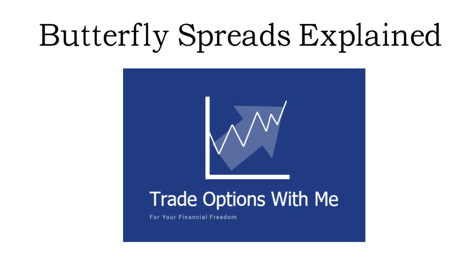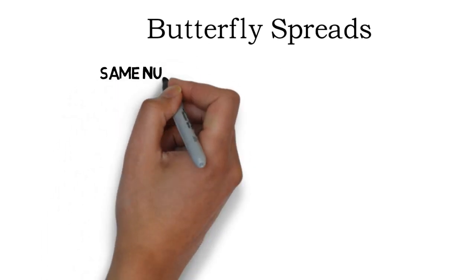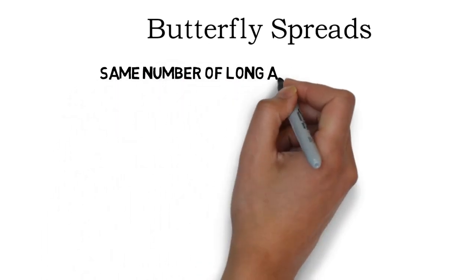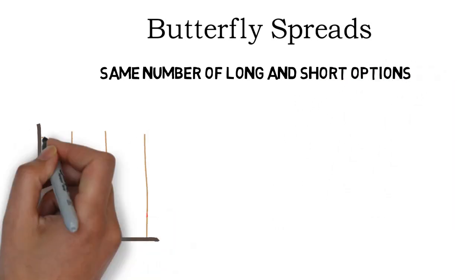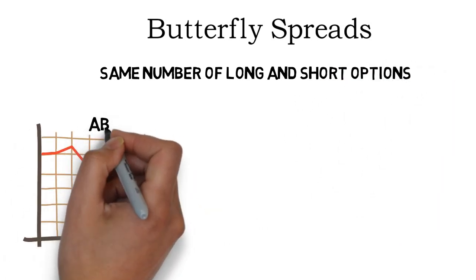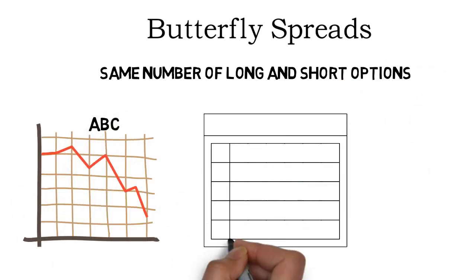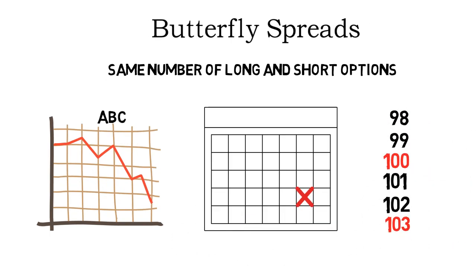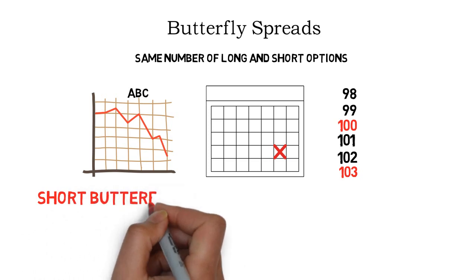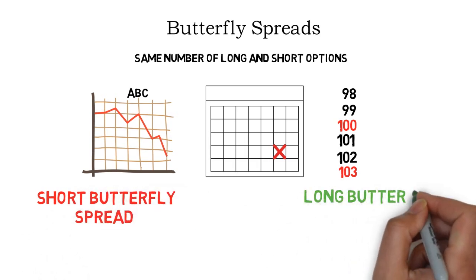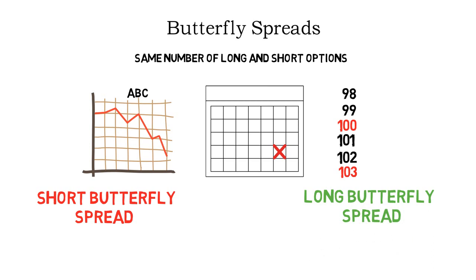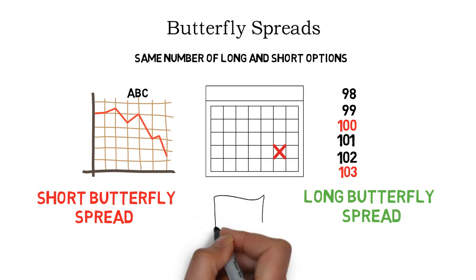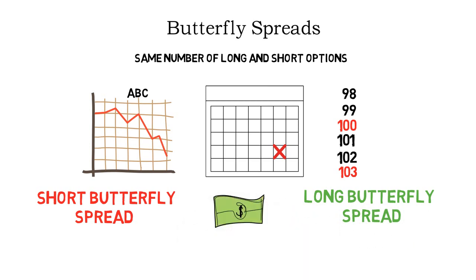Butterfly spreads are a very interesting strategy and they can be very profitable. A butterfly spread consists of different options on the same underlying asset and with the same expiration date, but with different strike prices. There are two different butterfly spreads: short butterfly spreads or long butterfly spreads. One main difference being that short butterfly spreads are opened for a credit and long butterfly spreads are opened for a debit.